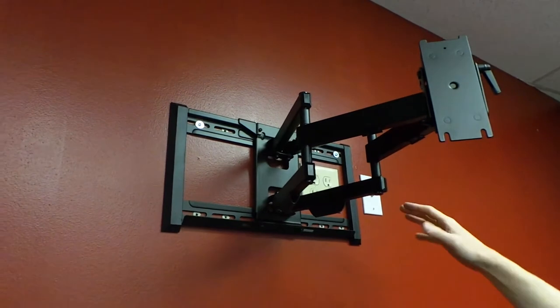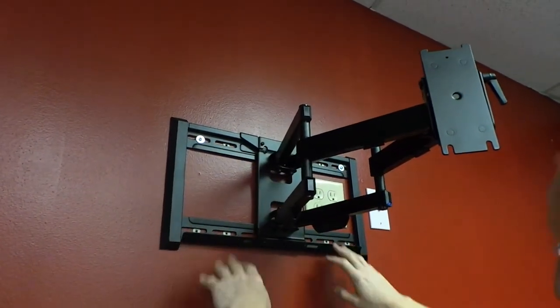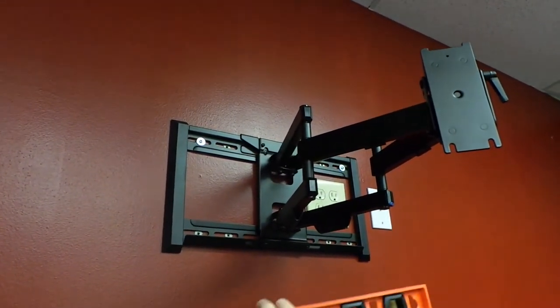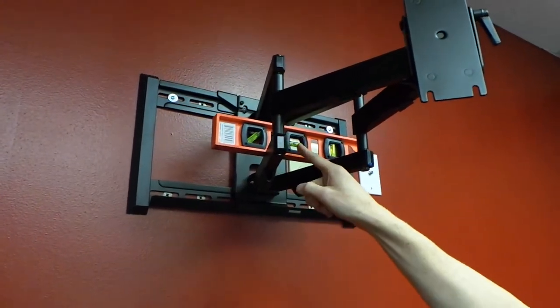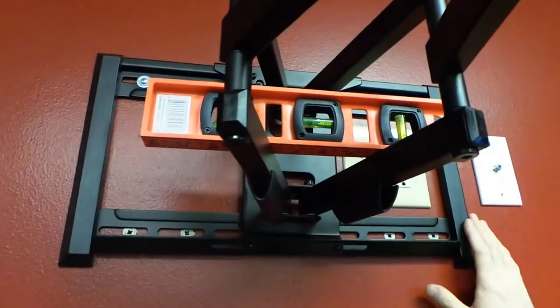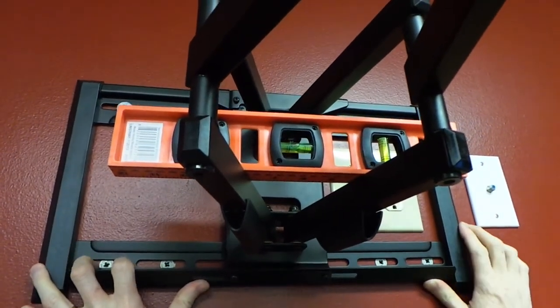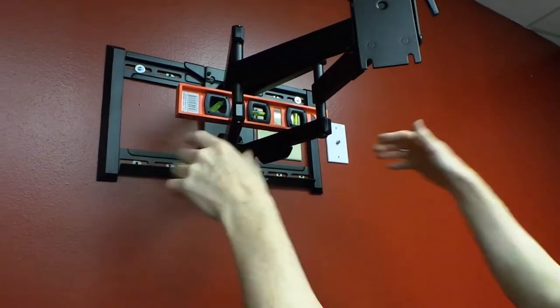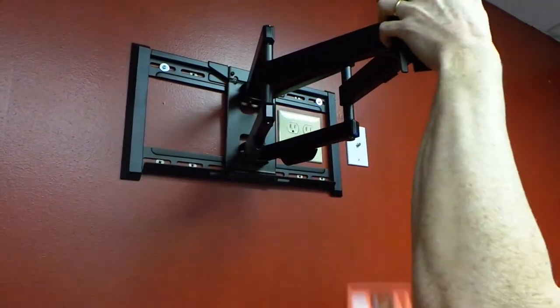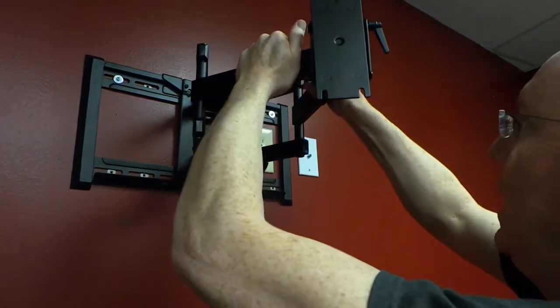So now the only other thing I need to do is I need to go through and mount the rest. Make sure you use a level and keep it level. So this is, if you look at the little bubble right there, it's a little off. So what we'll do is we'll just loosen one of these up and push on it a little till we get it level. Then we'll tighten them all down.